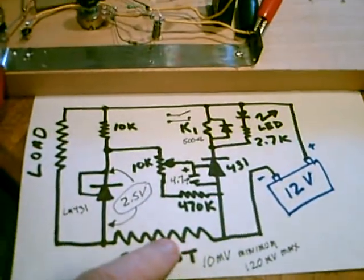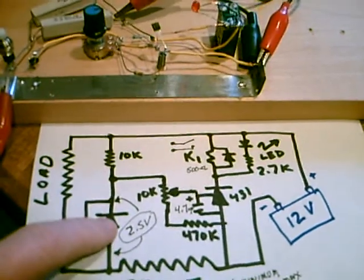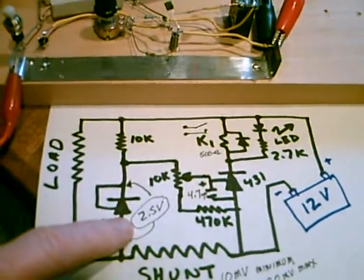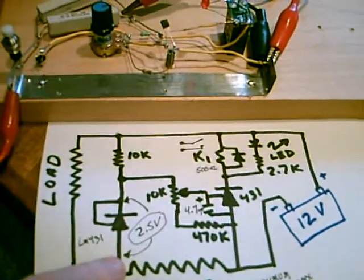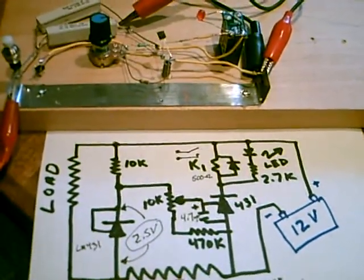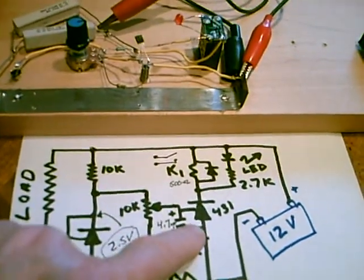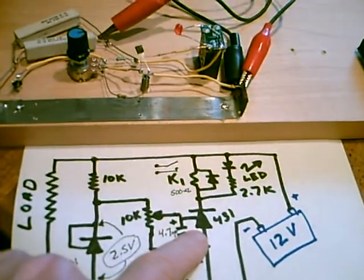Now here's that resistor right here. This LM431 is set to 2.5 volts and sits upon that resistor. So when it draws a load, it's 2.5 volts plus this voltage. Now this other 431 will turn on at 2.5 volts.